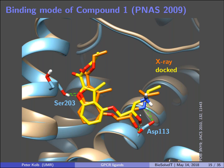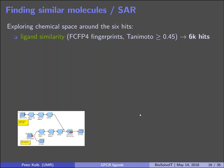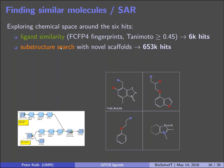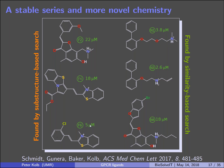We next investigated chemical space further around the novel molecules, asking whether they were singletons or had similar-binding fellows. We performed ligand similarity searches and structure-based searches, docking and assaying all hits. Benzothiazoles proved to be a novel scaffold that binds in several different variants. Interestingly, substituting the sulfur with an oxygen abolishes affinity, suggesting a distinct electronic component. We can also extend these series by docking.